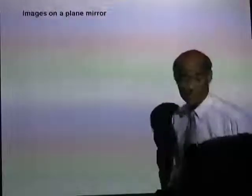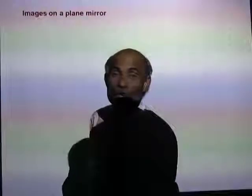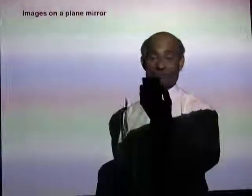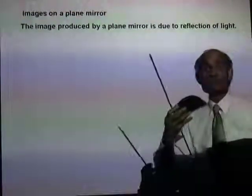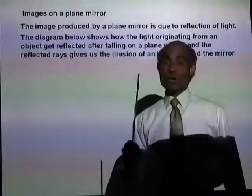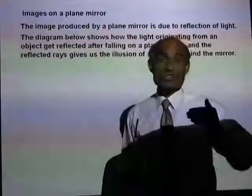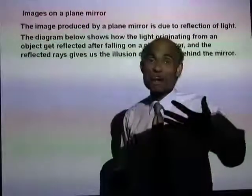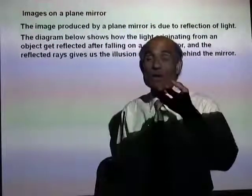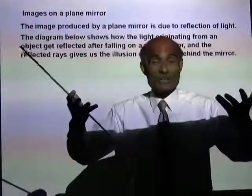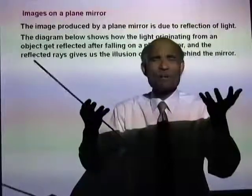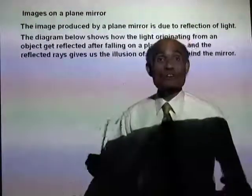Images on a plain mirror — when you look into a plain mirror, you see your image. The image produced by a plain mirror is actually due to reflection of light. One of the properties of light is that light travels in straight lines. At least that is the perception we have, and that creates a lot of illusion. Light is a very deceiving phenomenon; it can actually create a lot of illusions.